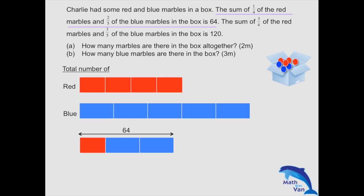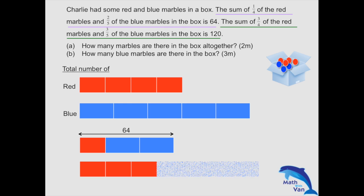The next sentence, the sum of three quarters, so three red blocks and three fifths of the blue marbles, so three blue marbles, and that will give us 120. That, as you can see, is actually the total number of marbles.